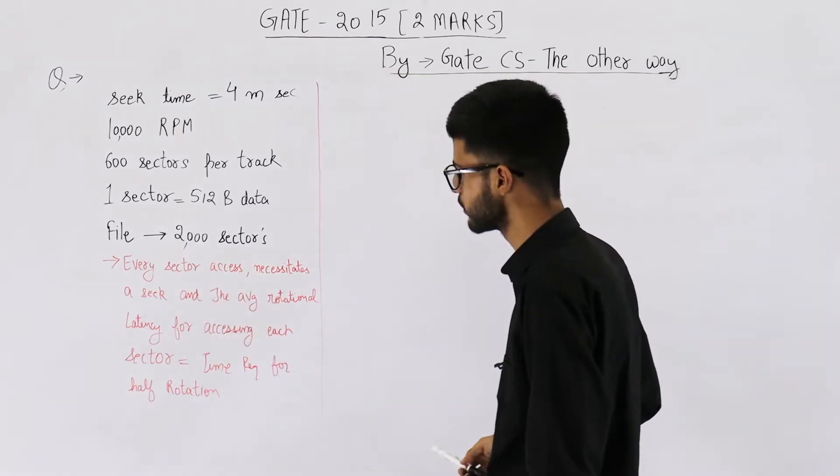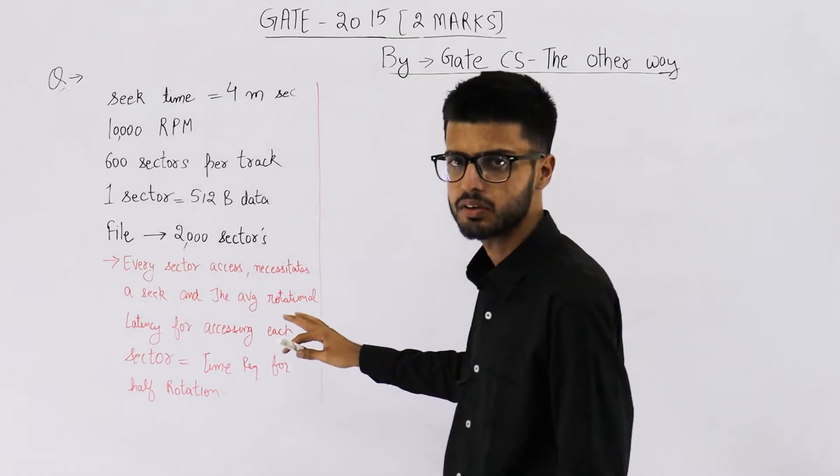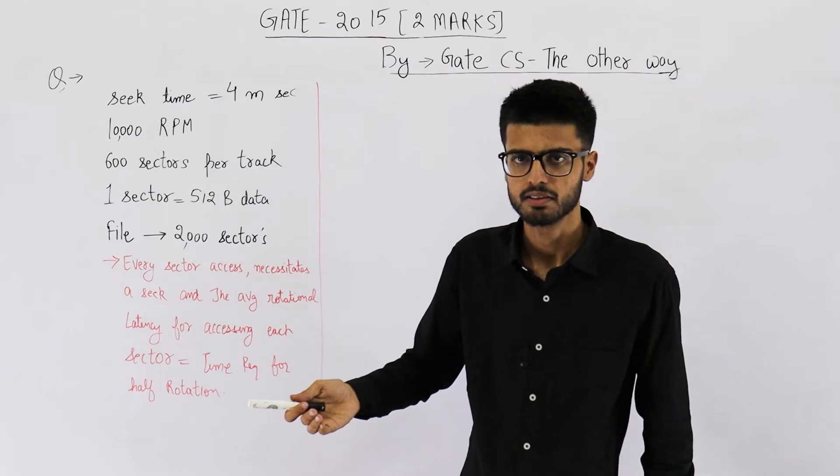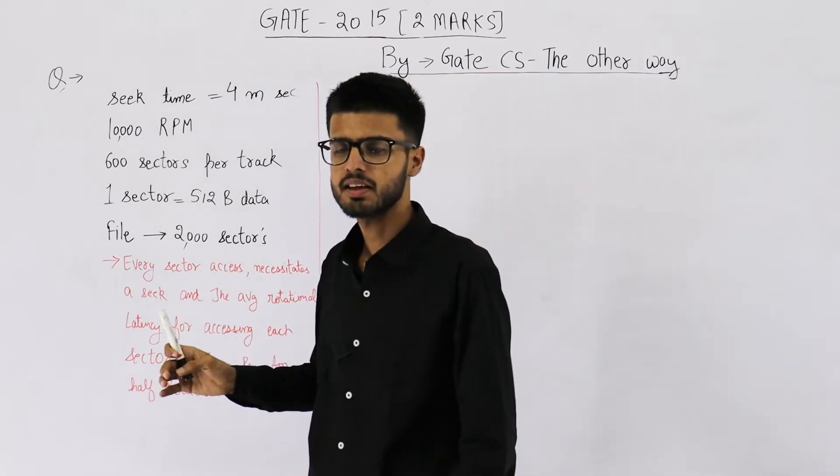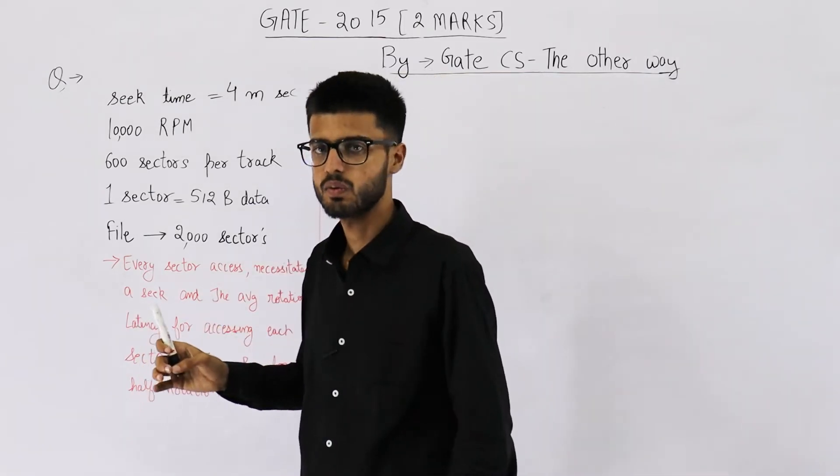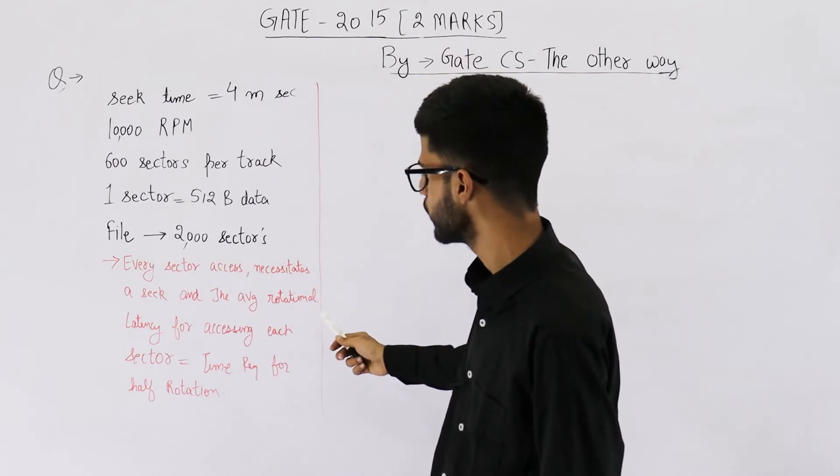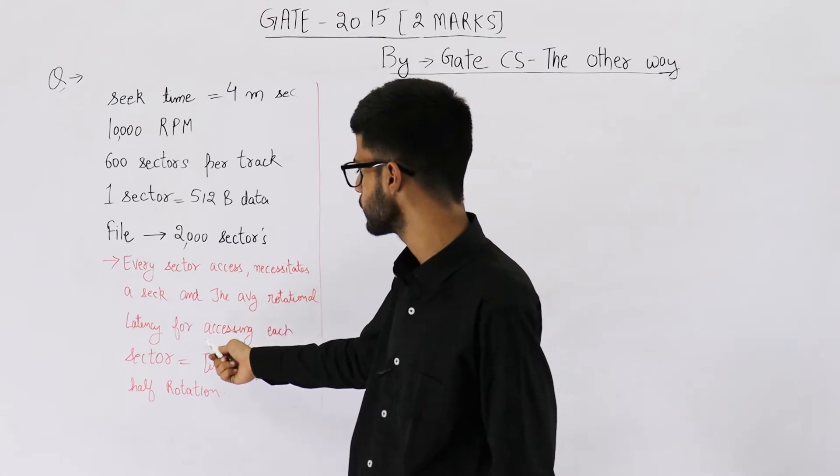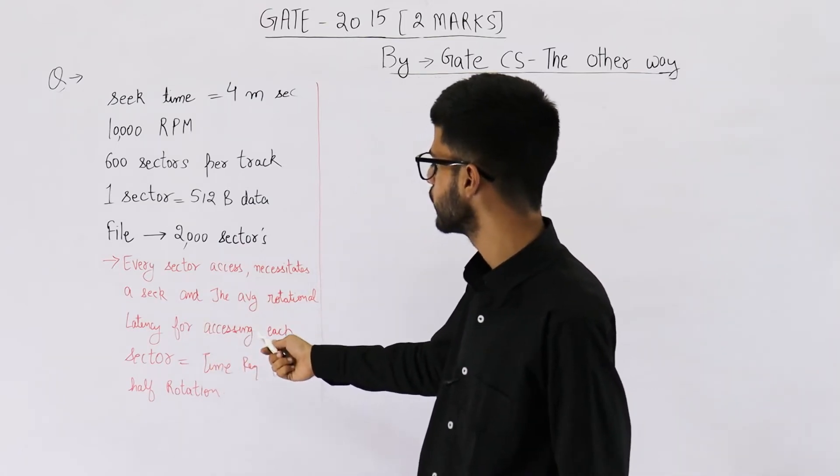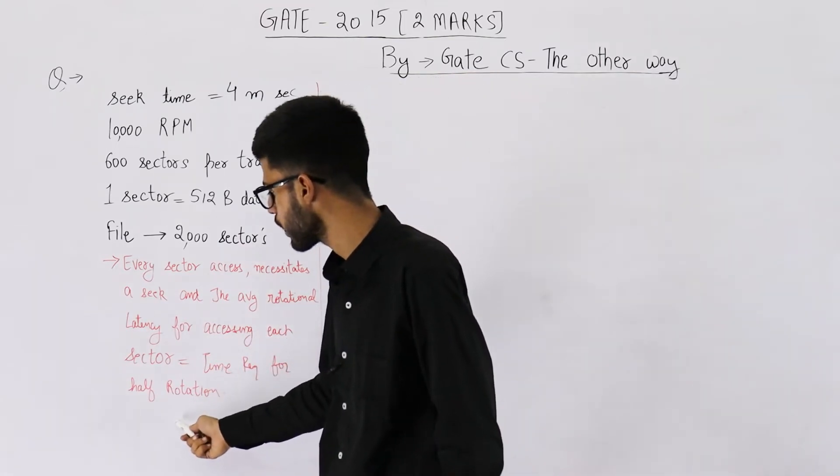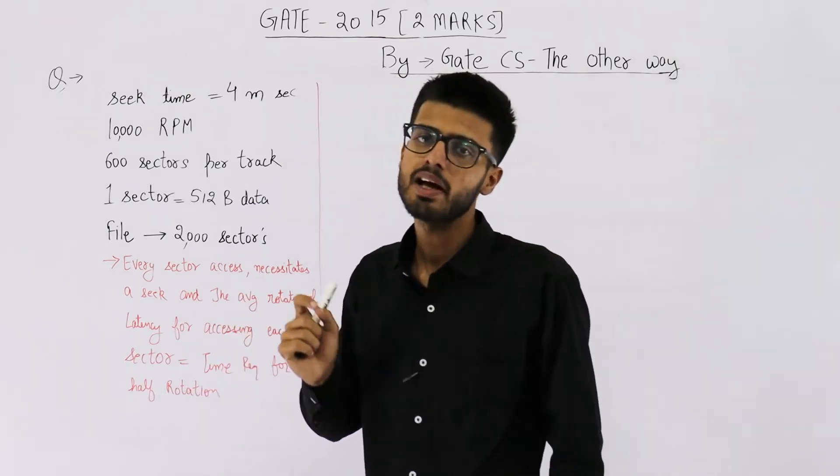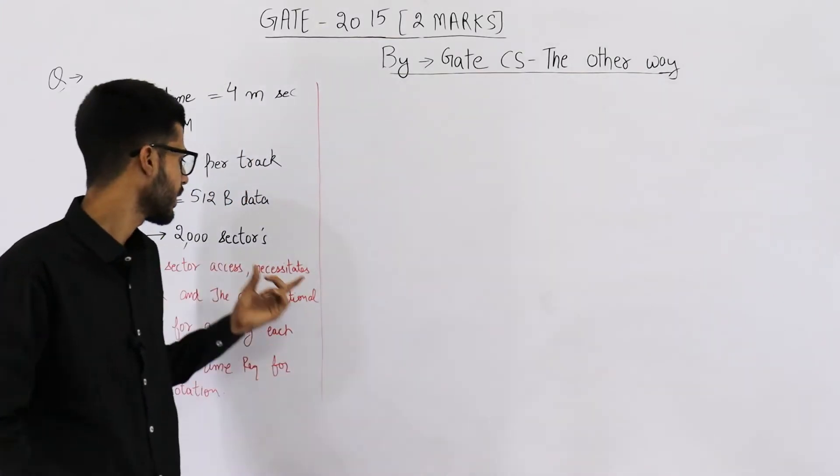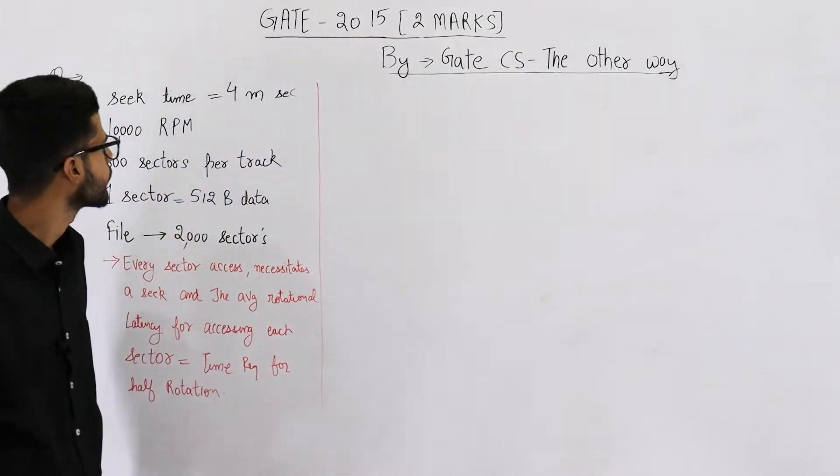This is very unusual because most of the files are saved in continuous sectors. So you count seek time as well as rotational delay only once. Anyways, let's read ahead. The average rotational latency for accessing each sector is equal to time required for half rotation. So seek time as well as rotation will be counted 2000 times, once for every sector.